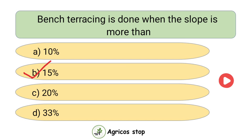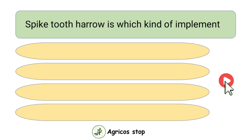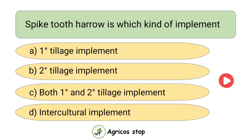Bench terracing is done when the slope is between 16 to 33 percent, that is greater than 15 percent. Spike tooth harrow is which type of implement? Options are Primary Tillage Implement, Secondary Tillage Implement, Both Primary and Secondary Tillage Implement, and Intercultural Implement. The answer is Secondary Tillage Implement.